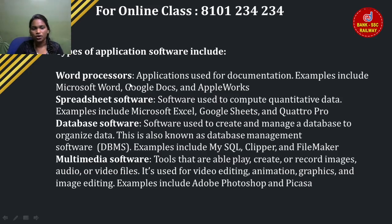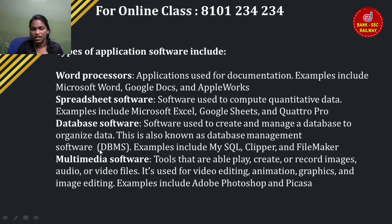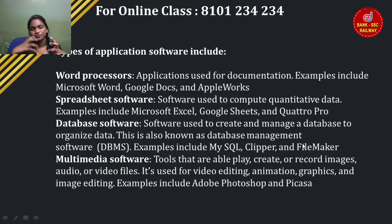Word processor: examples are Microsoft Word, Google Documents, AppleWorks. We can type and use documents with a word processor. Second: spreadsheet software — we can use MS Excel, Google Sheets, Quattro to create spreadsheets and save data. Third: database software is used to create, manage, and organize data. Database management software (DBMS) — examples include MySQL, Clipper, FileMaker. We can save images, videos, and documents in the database software.